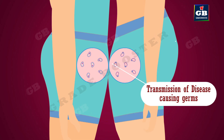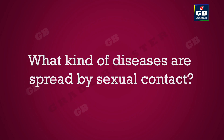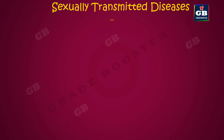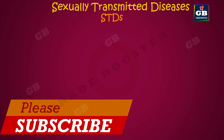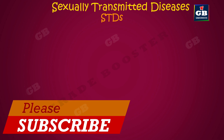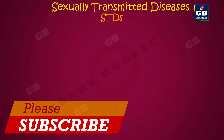What kind of diseases are spread by sexual contact? The diseases that are spread through sexual contact are called sexually transmitted diseases. In short form, they are called STDs.